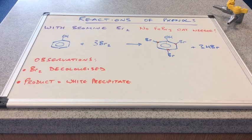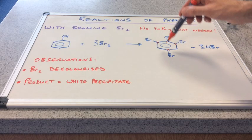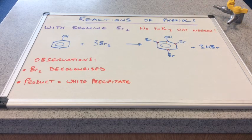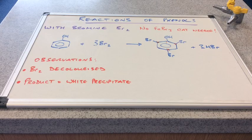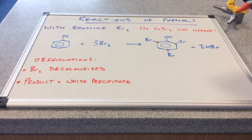So this is called 2, 4, 6, tribromo, because there's three bromines on this. So 2, 4, 6, tribromophenol.